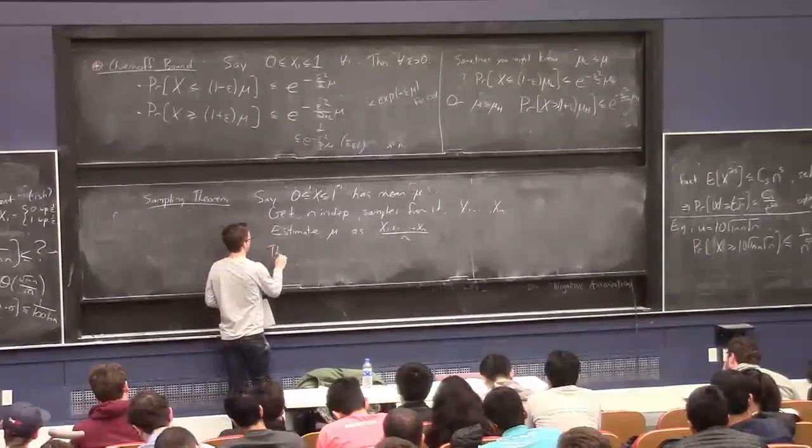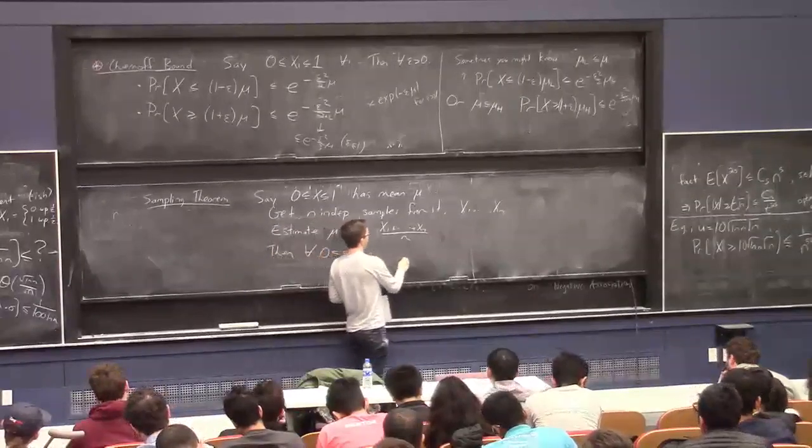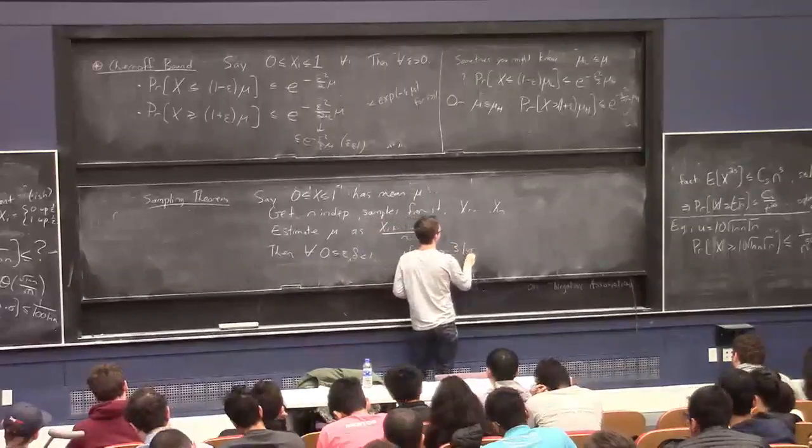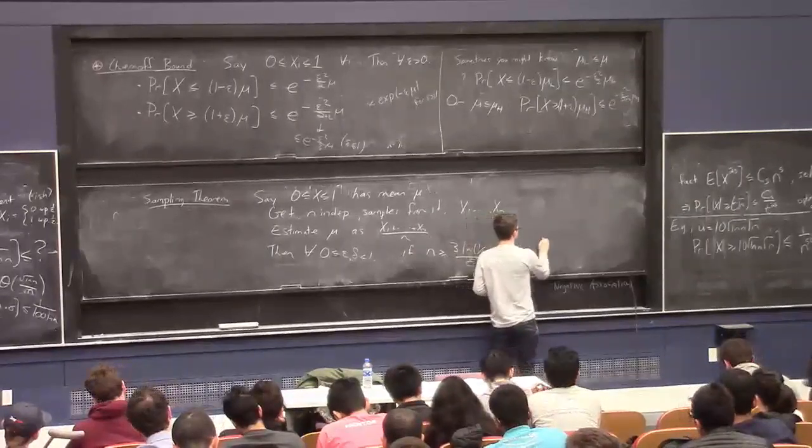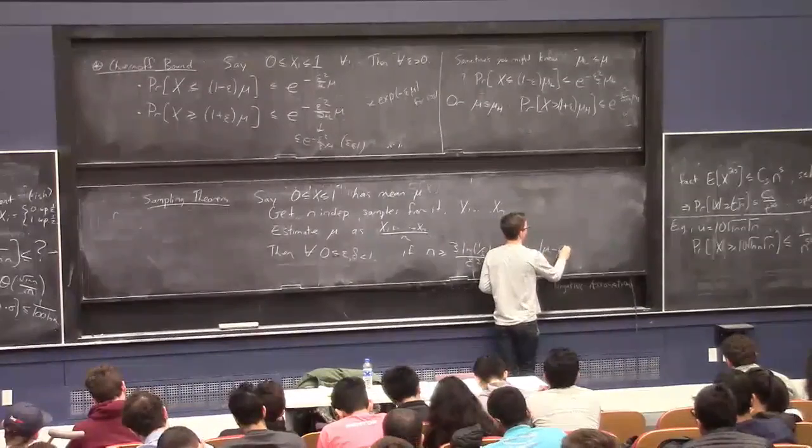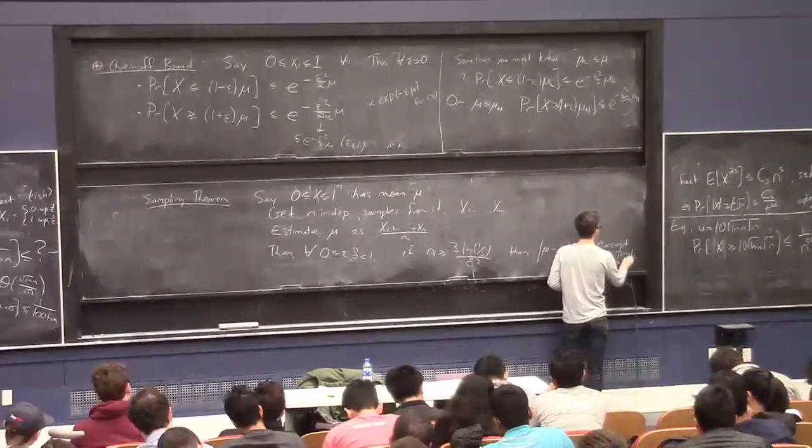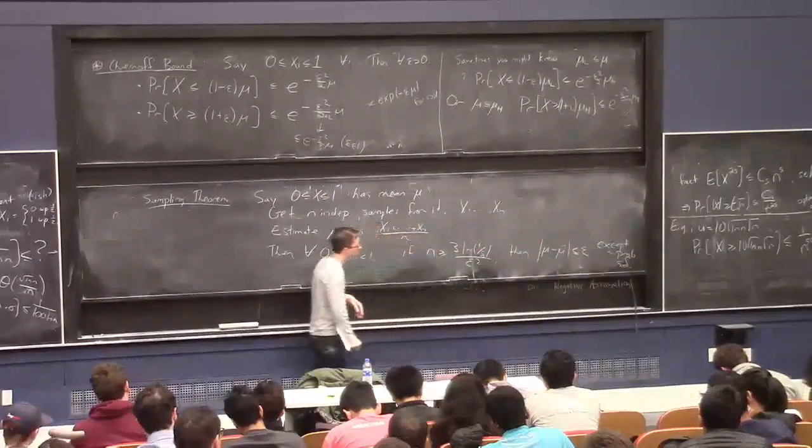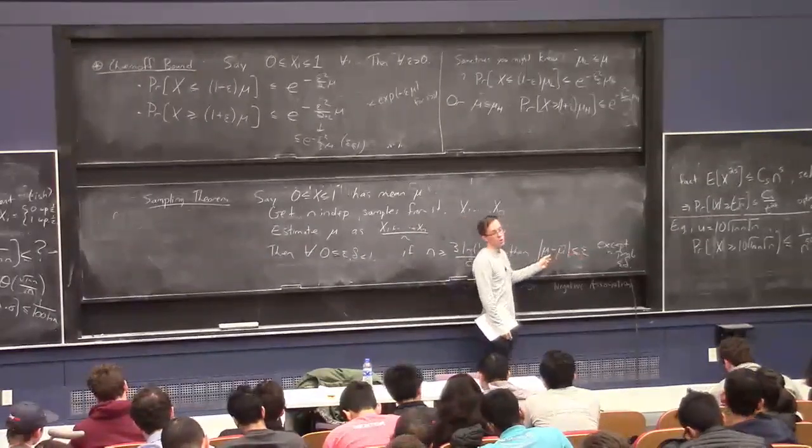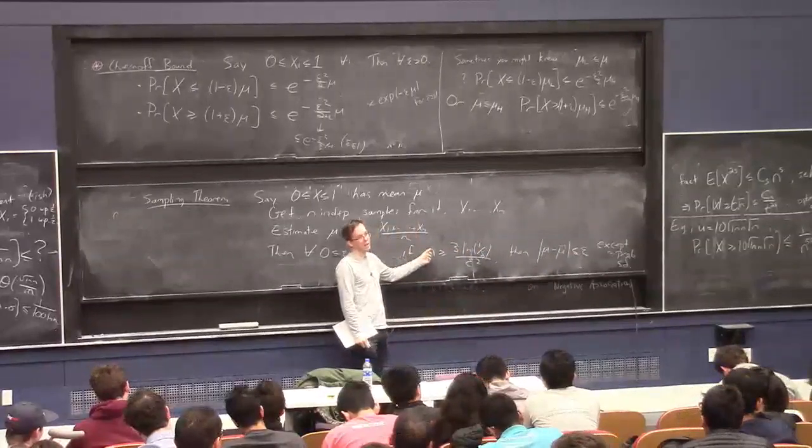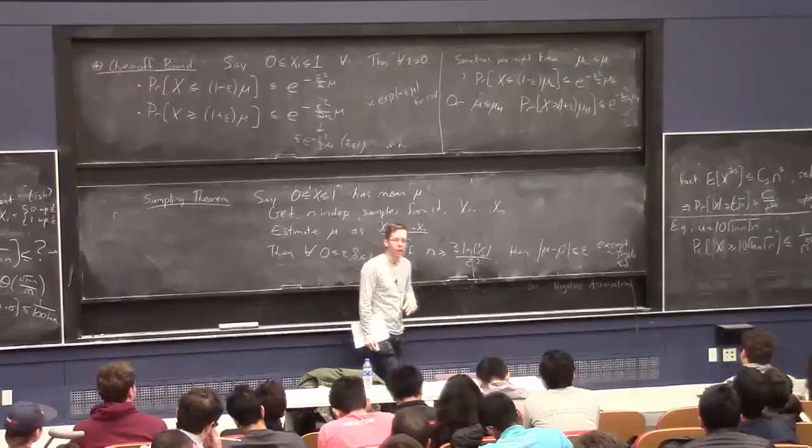And it's a direct corollary of Chernoff bounds that for all parameters epsilon and delta, if n is bigger than 3 log 1 over delta over epsilon squared, then your estimate will be epsilon accurate except with probability at most delta. This is the kind of thing that you use in polling, right? You want to say that, oh, 19 times out of 20 or delta equals 0.05, my reported mean is within some tolerance epsilon of the true mean. And Chernoff bound tells you how many samples you need to take in order to make that true. And it's basically proportional to 1 over epsilon squared. I'll stop there and see you on Thursday.